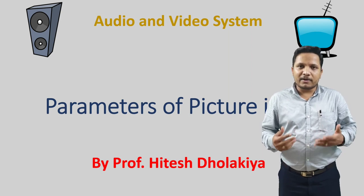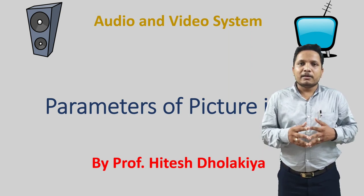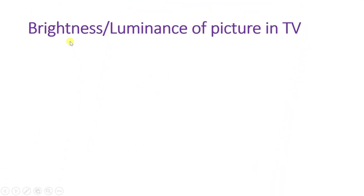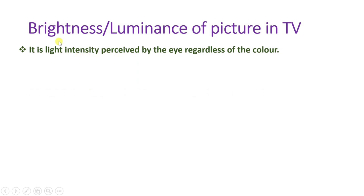Let us begin with the first topic: luminance, or brightness, of the picture in television. It is the intensity of light perceived by the eyes regardless of color. Brightness explains the intensity of light received at our eye — it does not depend on color, it is just intensity of light.